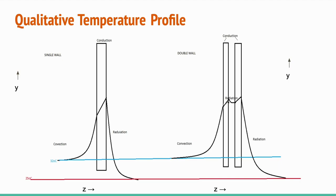When we use the double wall instead of the single wall, the heat in the form of radiation gets partially reflected from the second wall and sent back into the incubator. This reduces the heat loss to the surroundings through radiation.